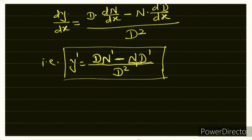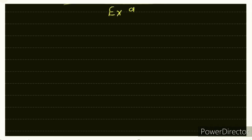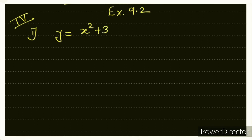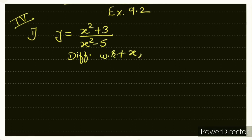Now we will solve sums from Exercise 9.2, question number 4. The question is: differentiate the following with respect to x. The functions are given in u/v form. First sum: y = (x² + 3) / (x² − 5). This is in numerator upon denominator form, so let us apply the formula.